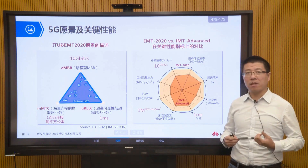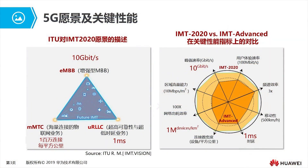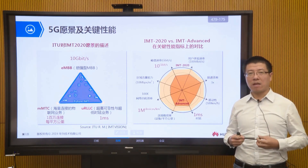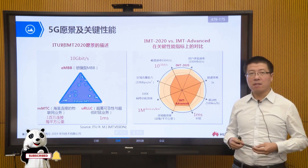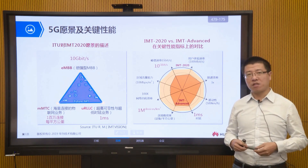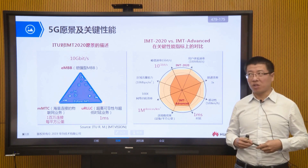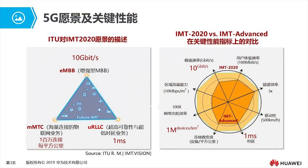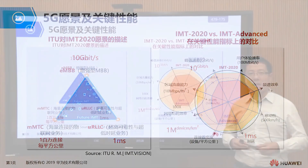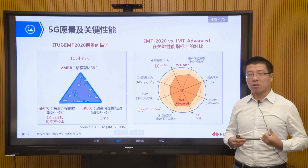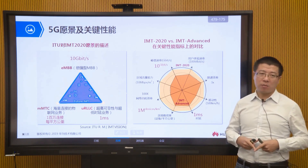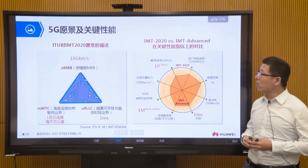These three application scenarios brought three key performance indicators: downlink rate needs to reach 10 Gbps or above, delay must be controlled within one millisecond, and connectivity needs to achieve 1 million connections per square kilometer. Looking more broadly, the whole 5G network has enhancements in KPIs compared to 4G. This picture shows a comparison of IMT-2020 and IMT-Advanced — IMT-Advanced corresponds to LTE/LTE-A, with the inner circle showing its KPIs and the outer circle showing 5G IMT-2020 KPIs.